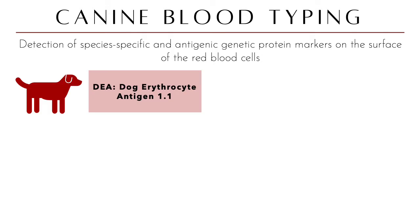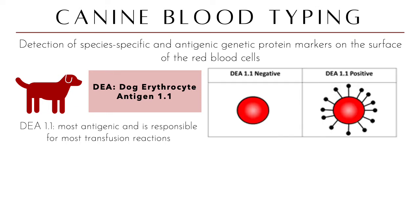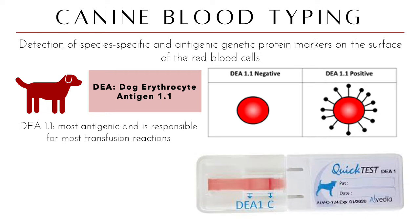Blood typing is the detection of species-specific antigenic protein markers on the surface of red blood cells. For dogs, it is the dog erythrocyte antigen DEA 1.1, which is pointed out because it is the most antigenic and responsible for most transfusion reactions. A DEA 1.1 negative dog does not express that antigen on its surface. Testing works similarly to immunochromatographic strip tests — one drop of blood is applied and a line at DEA 1 indicates a positive result.